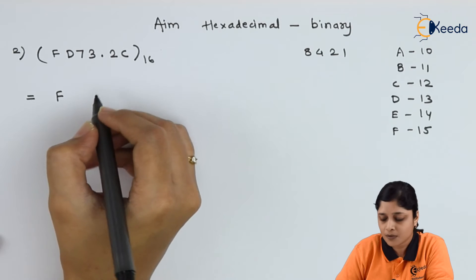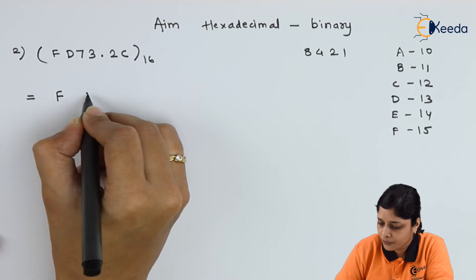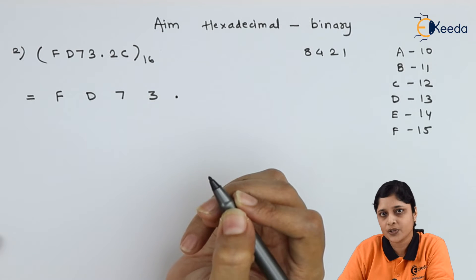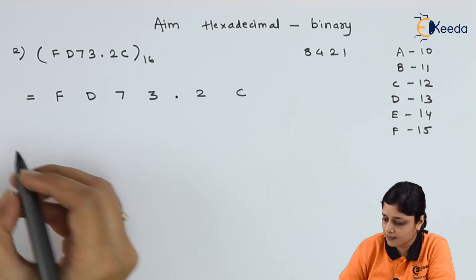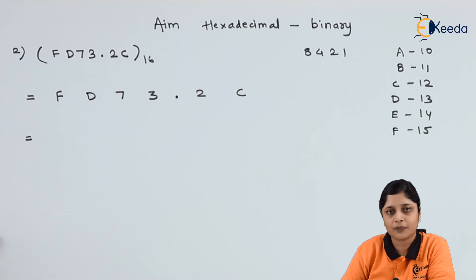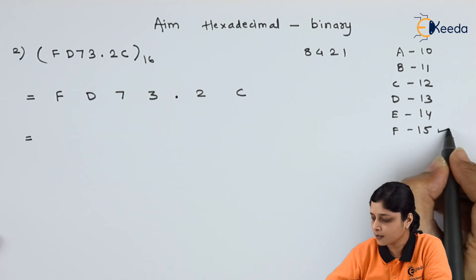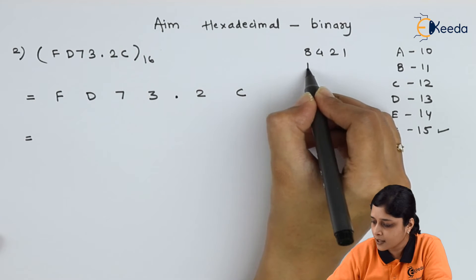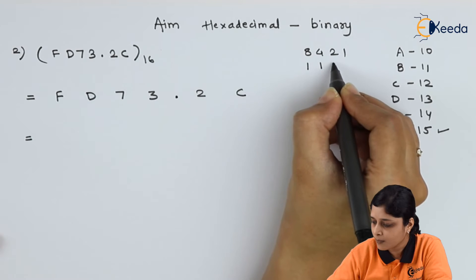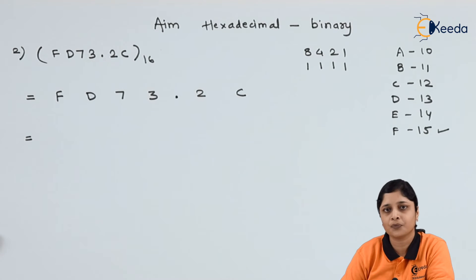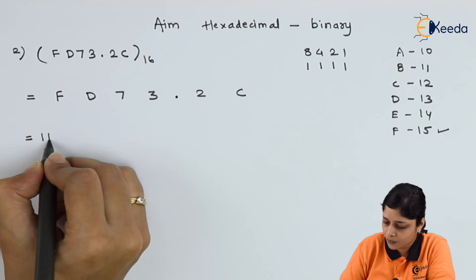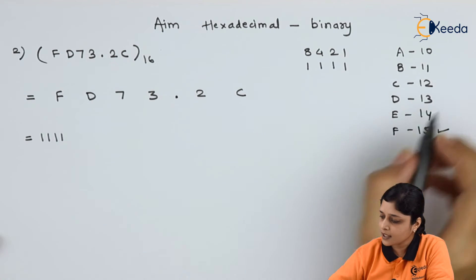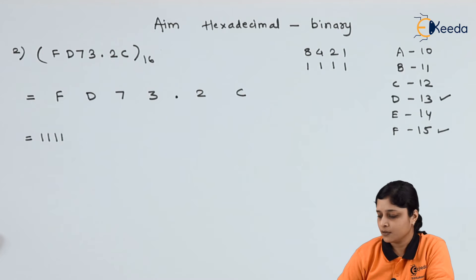Write down the problem with space: F D 7 3 decimal point 2 C. For F, the decimal value is 15. Using 8 plus 4 is 12, plus 2 is 14, plus 1 gives 15. So binary for F is 1111.